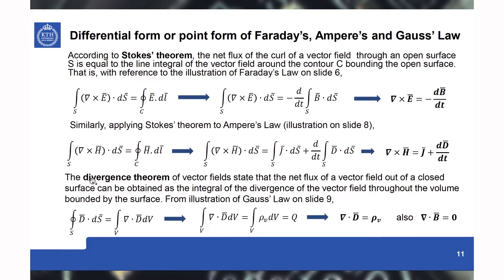For deriving Gauss's law, whether for the electric field or magnetic field, we use the divergence theorem, which states that the net flux of a vector field out of a closed surface can be obtained as the integral of the divergence of the vector field throughout the volume bounded by the surface. For illustration, take the closed surface shown on slide 9 — it is a completely closed surface with no edges. The total flux coming out of that closed surface, according to the divergence theorem, equals the volume integral of the divergence of vector D.